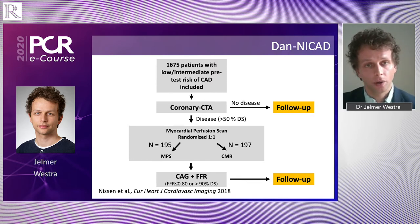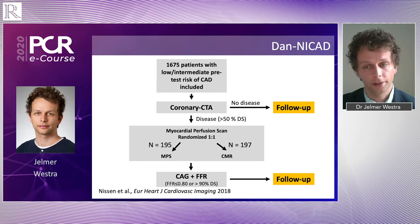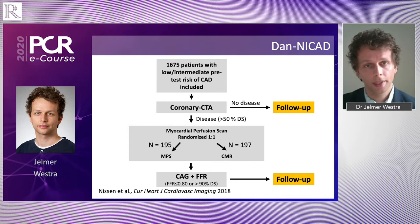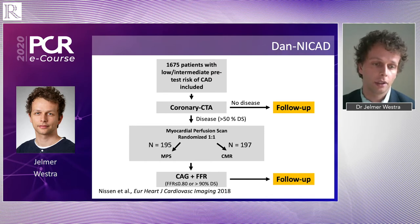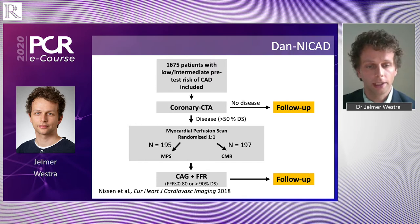Patients all received CT scans, and if the CT scan indicated disease, the patients were randomized for either scintigraphy or CMR. They would then be referred for a cath lab with a contemporary FFR measurement. Disease was defined as either one lesion with FFR below 0.8 or one high-grade lesion with more than 90% diameter stenosis.